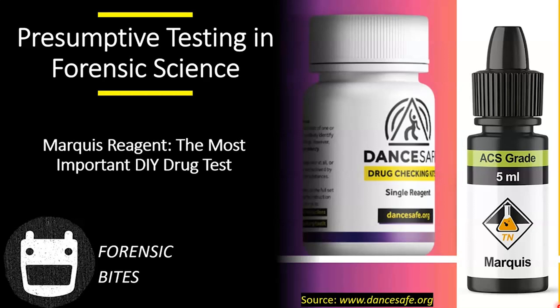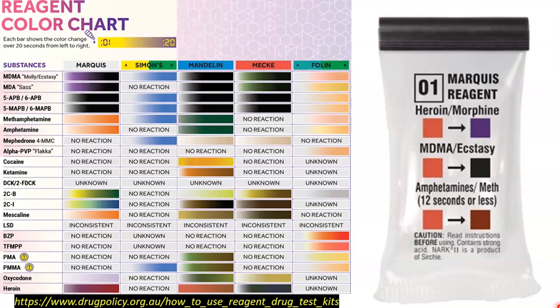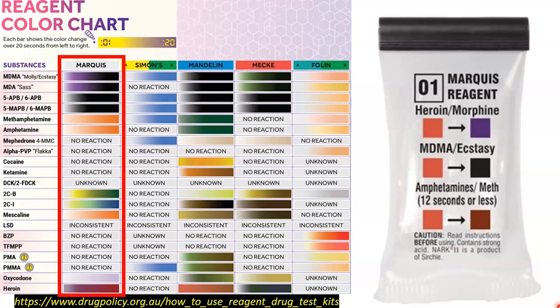Hello and welcome back to Forensic Bytes. Today we're going to be talking about arguably the most important reagent used in presumptive drug testing: Marquee reagent. To do that, we're going to be referring to a new colour test chart which is available online from Drug Policy Australia. Looking at it, we can see that Marquee reagent is the first test in the sequence, and the reason for that comes down to its intended reactivity.